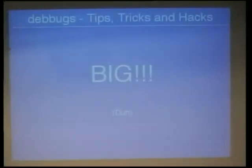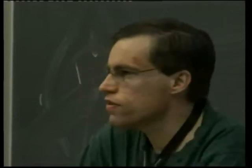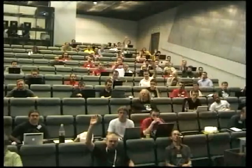Debbugs is very big — it deals with a lot of data: 300,000 bugs, 50,000 to 60,000 currently active, thousands of messages a day, hundreds of release critical bugs, and lots of queries while people look at those bugs. The structure of the Debbugs database is basically a file system — there are four files per bug. Dealing with 200,000 files in a single directory is not fun, so we've had to do some hashing. The archive bugs — 300,000 bugs by four files each — is not pretty.